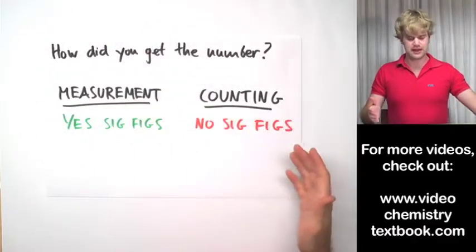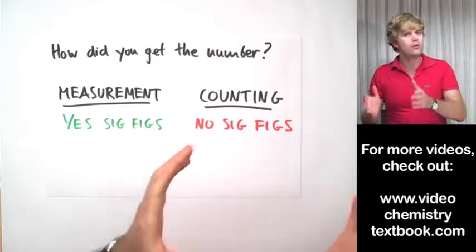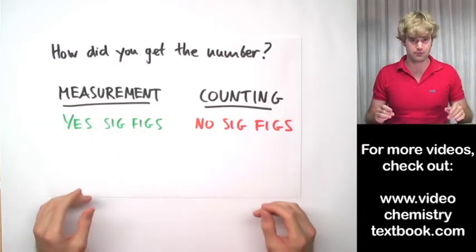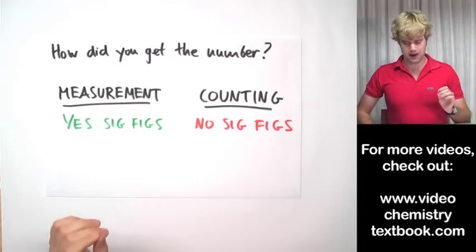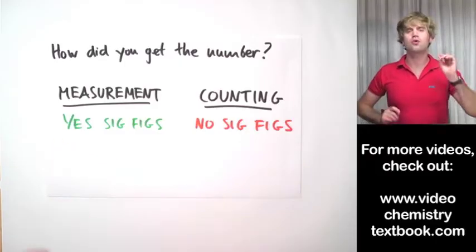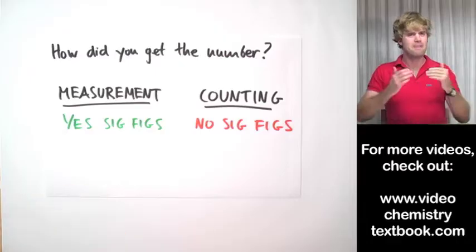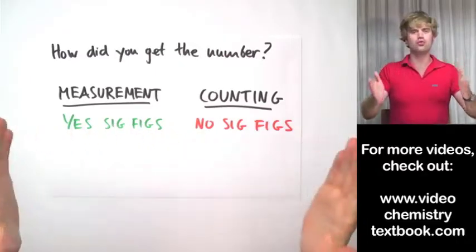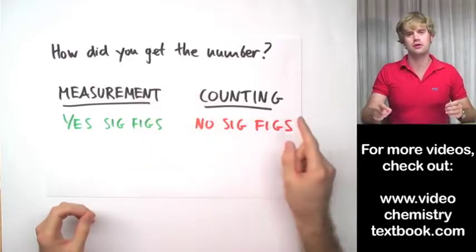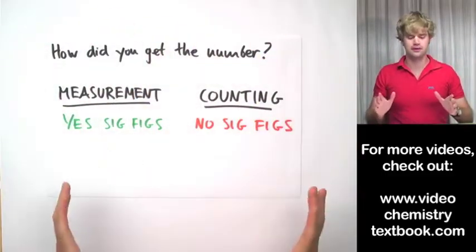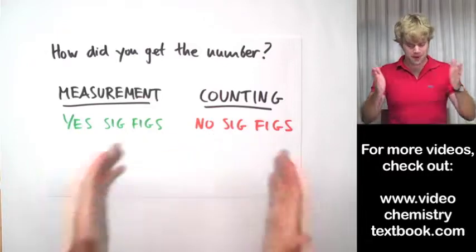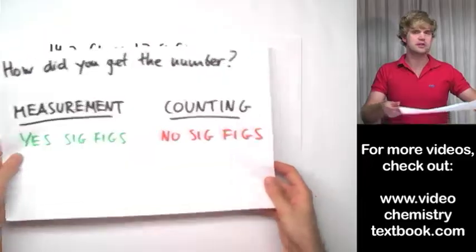The first thing I want to talk about is when we use significant figures and when we don't. You don't always use significant figures rules when working on a math problem. The key question is: where did we get the number? Did we get it by measuring something — like using a scale, a ruler, or a thermometer? Or did we get the number just by counting, like counting five people in a room? If we're measuring something, we use significant figures. If we've counted numbers, we don't.